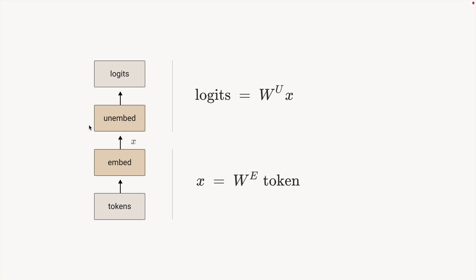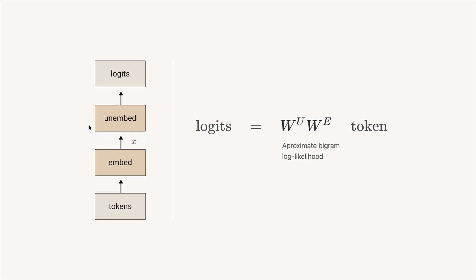We're just going in front of the previous token and predicting the next token by multiplying through those two matrices. We can just write those out as a product. That W^U W^E matrix has to be representing the bigram statistics, the frequencies that empirically one token follows another.